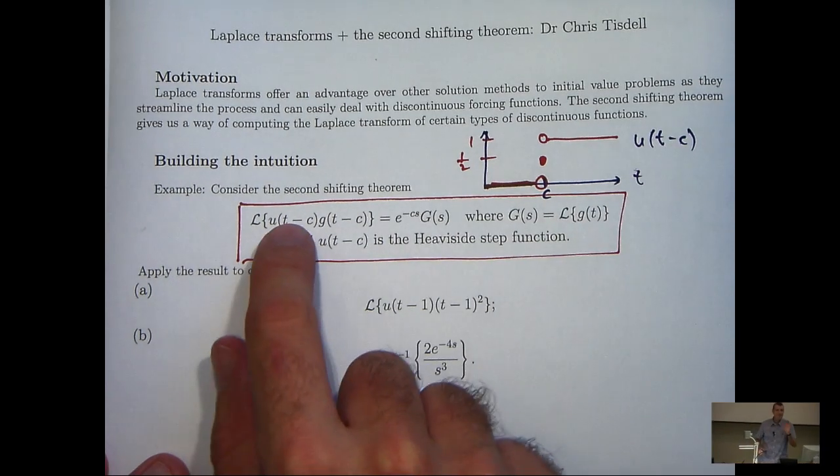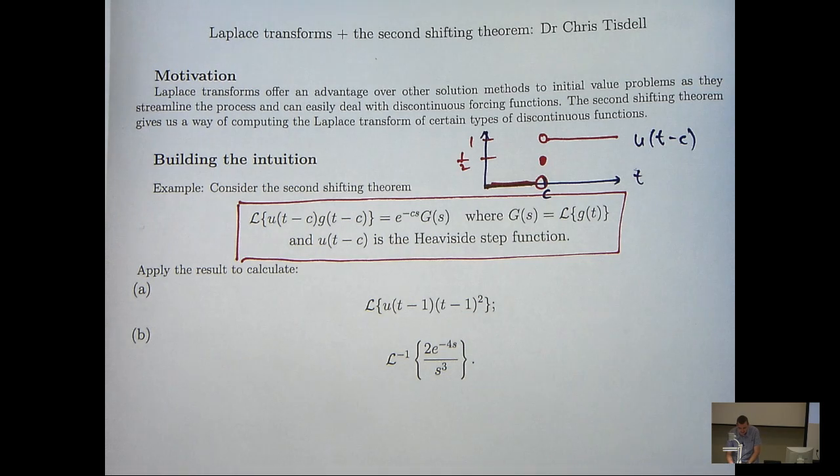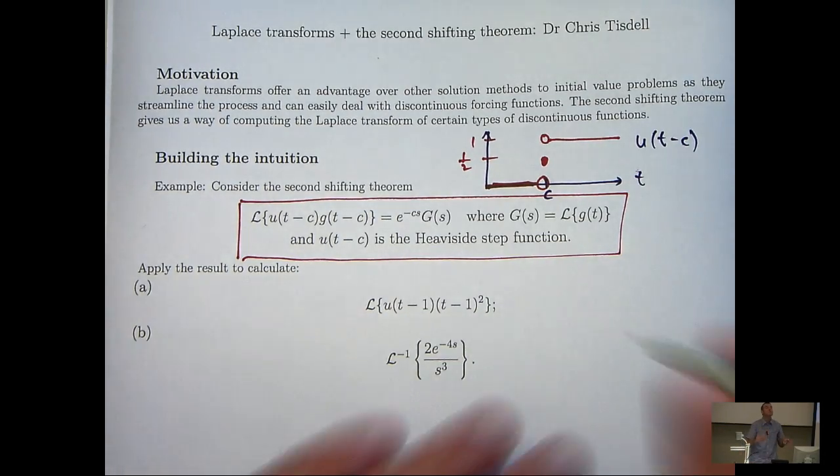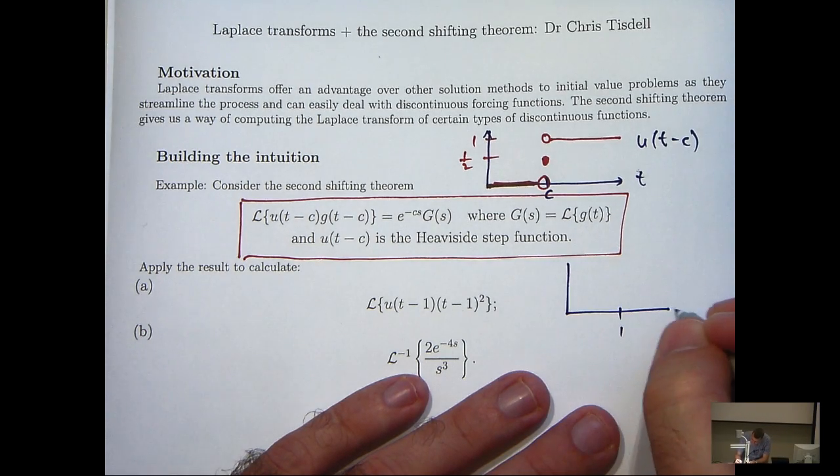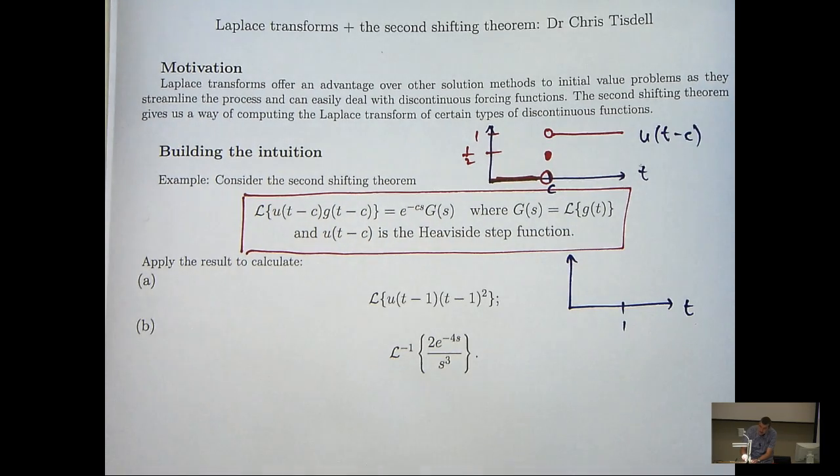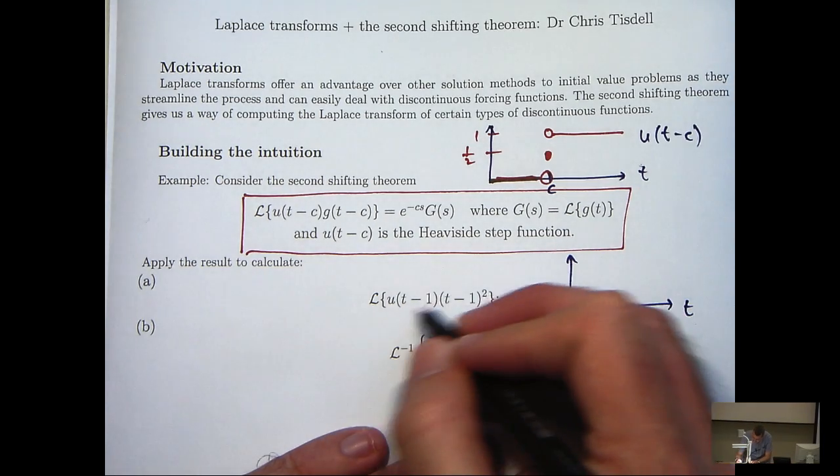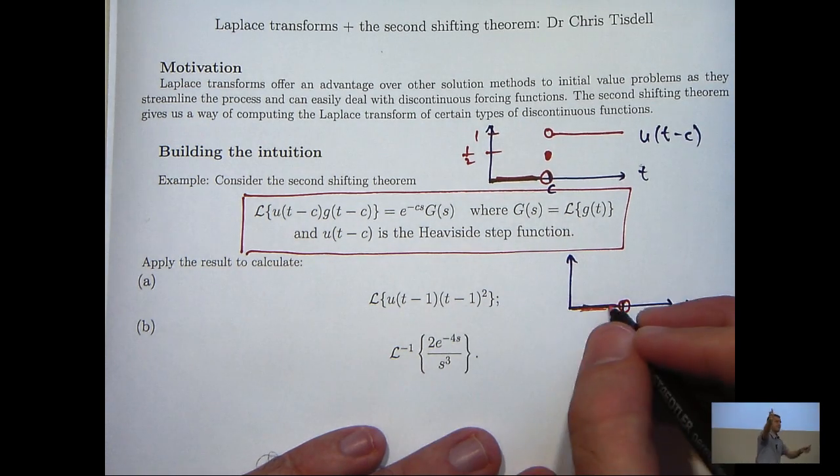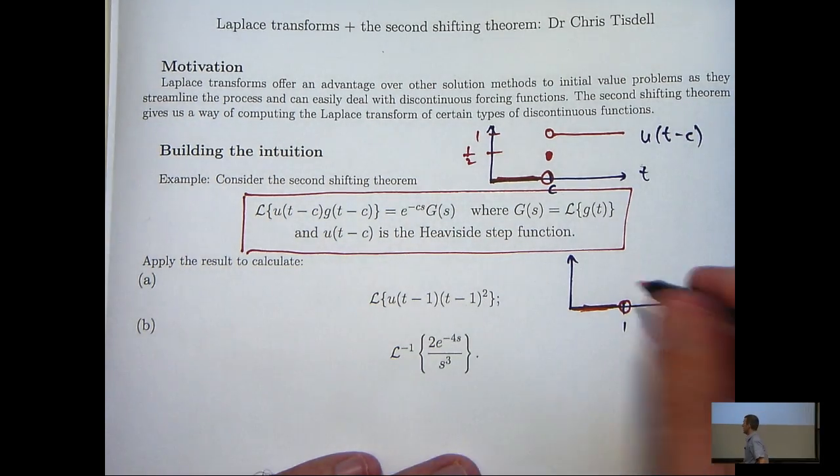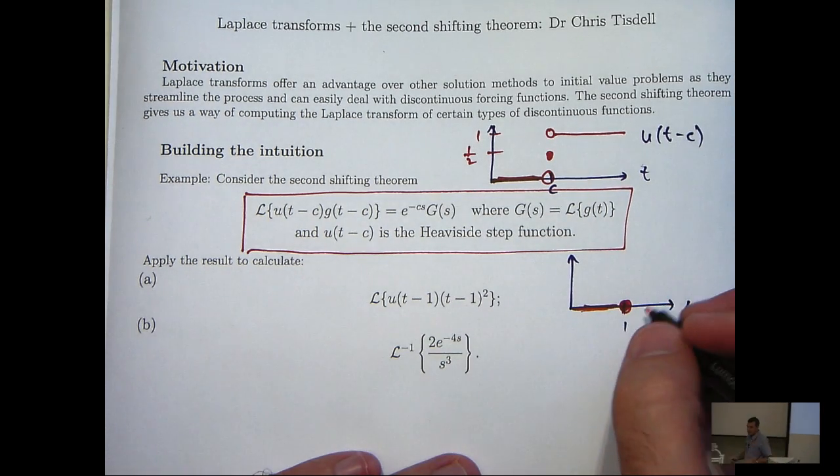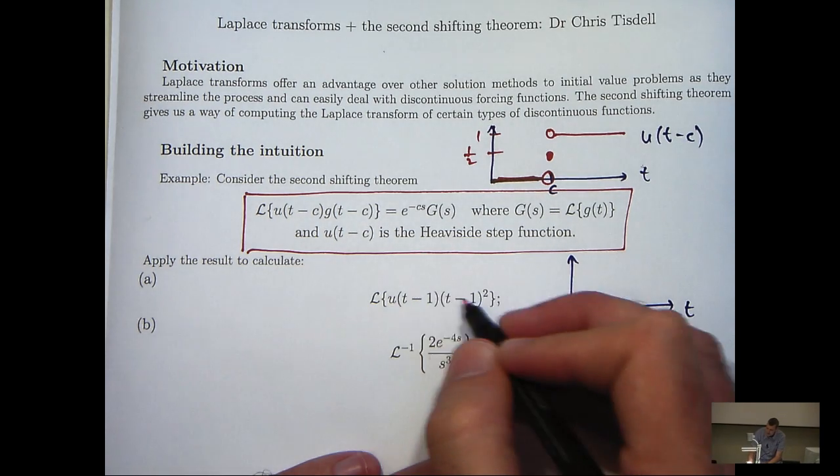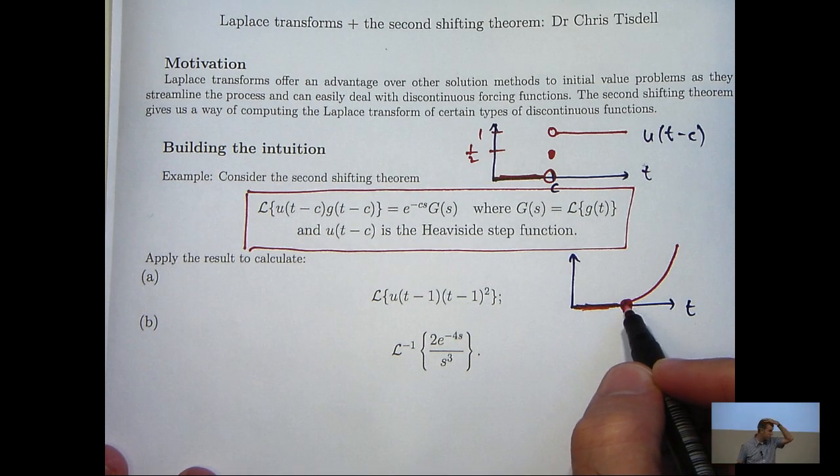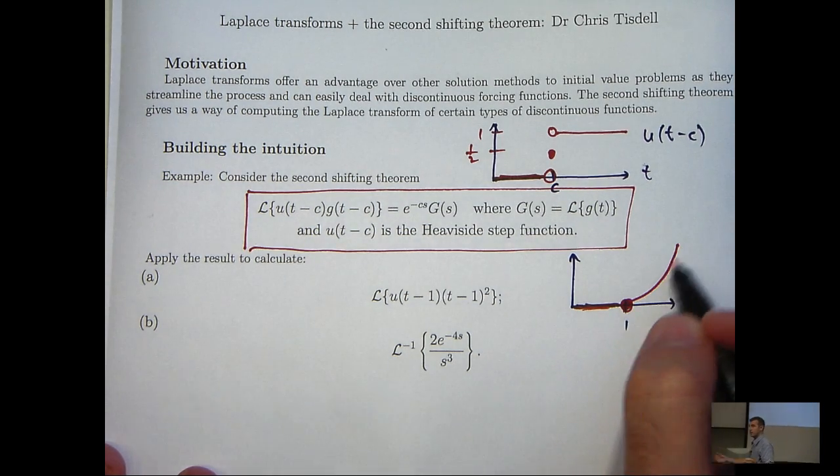Now when we multiply this heavyside step function by another function, you can think of this multiplication switching the function on and off. So in this case, the graph would look something like this. So to the left of 1, this is just 0. So we're going to get this here as our product. Now at t equals 1, well this is a half but this is 0. So actually the product is 0. And then to the right of 1, this is 1. And this is just, of course, t minus 1 all squared. So it's going to look something like this. So you can see here that as we get to the point 1, the function sort of switched on and we get the behavior that we would expect.